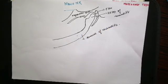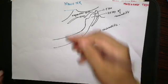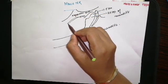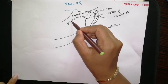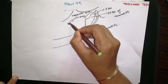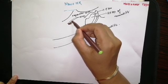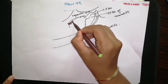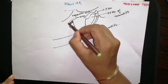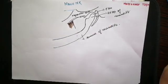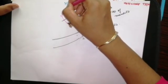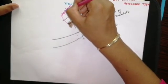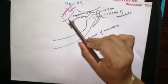The masseter muscle has two layers: a superficial layer and a deep layer. The superficial layer takes its origin from the lower border of the zygomatic arch, that is the anterior two-thirds of the lower border of the zygomatic arch. The superficial fibers originate from this region.